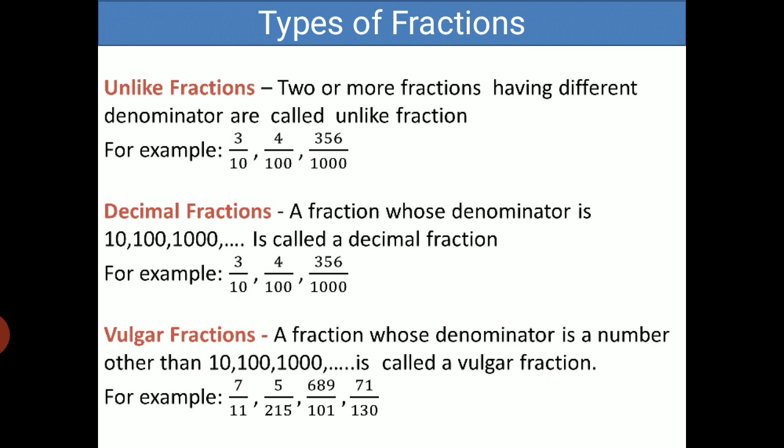Next is vulgar fraction. A fraction whose denominator is a number other than 10, 100, or 1000 is called a vulgar fraction. Example: 7 by 11, 5 by 215, 689 upon 101, 71 upon 130.